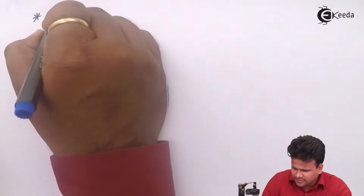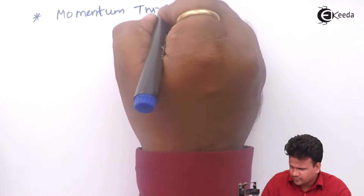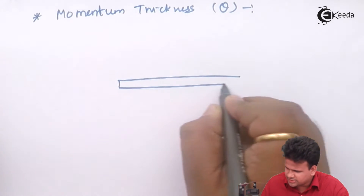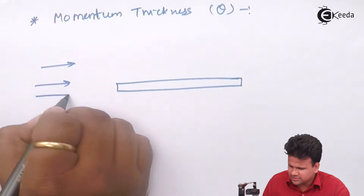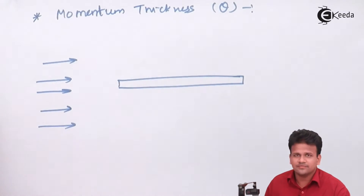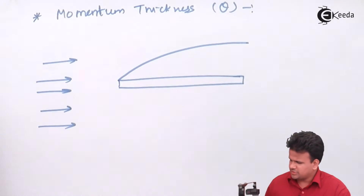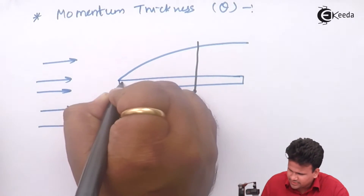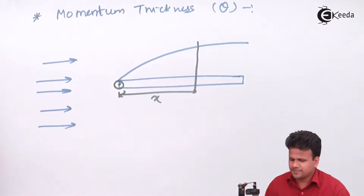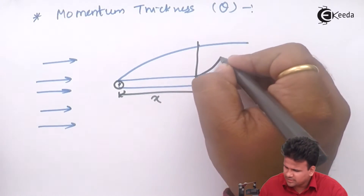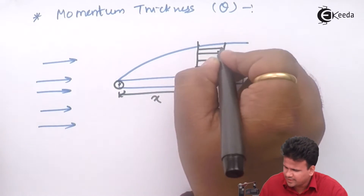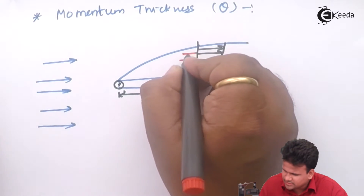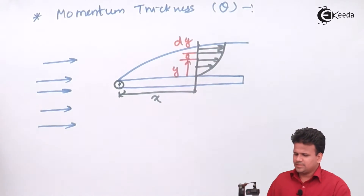Let us study what is momentum thickness. It is denoted by theta. For that, we should have a solid surface, and there should be a free stream velocity flowing with U-infinity. Due to this, there will be a formation of a boundary layer. Let us take a section at some x-coordinate from the leading edge, which will have some velocity gradient du/dy. Along this velocity gradient, at a distance y, let us consider an elemental strip of thickness dy.